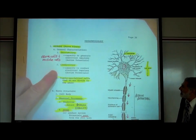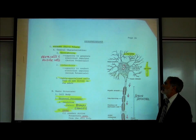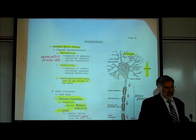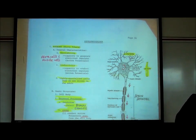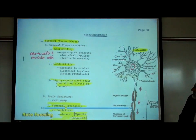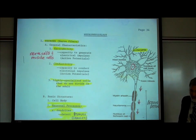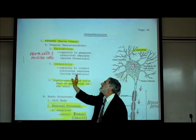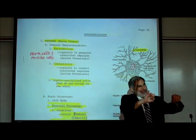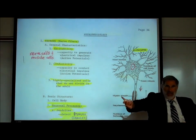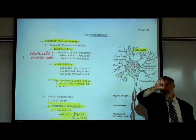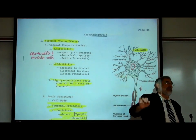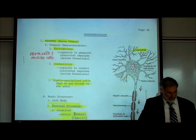Both nerve cells and muscle cells exhibit excitability — the capacity to generate an electrical current called an action potential. Furthermore, because they're long and skinny, they conduct this electrical impulse along their length. So this action potential, or electrical current, is conducted along the length of the nerve cell, nerve fiber, or muscle fiber.